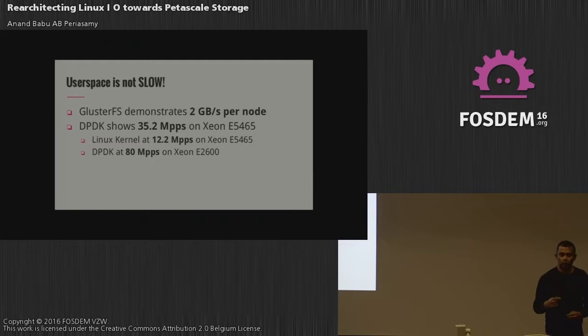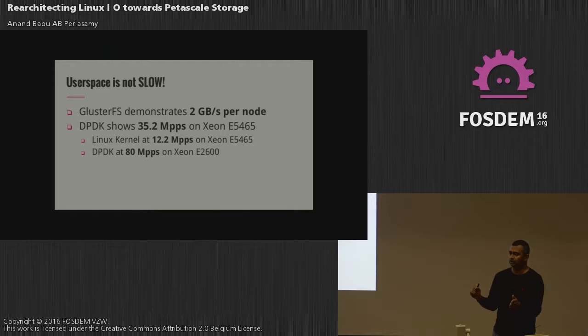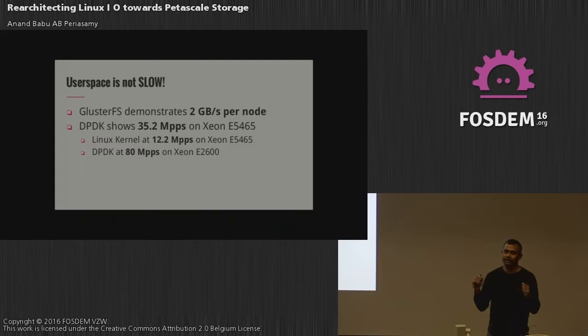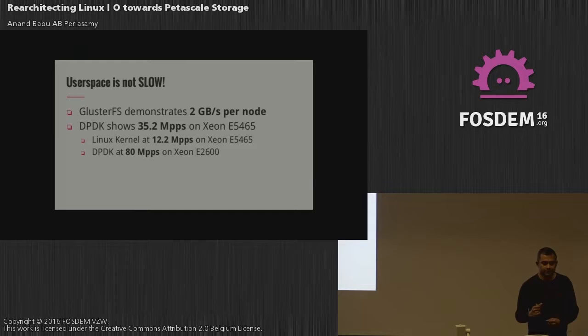In the early days of Gluster, we were able to break the idea that user space file systems are slow. We demonstrated two gigabytes per second per node on a cluster, and on a small cluster we showed 16 gigabytes per second throughput. This was peaking a 20 gigabit InfiniBand card back then. We showed that you can actually get full performance close to network limits — even memory-to-memory RDMA transfer, all from user space.